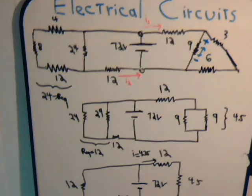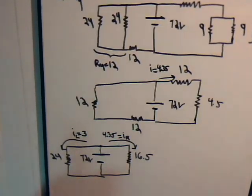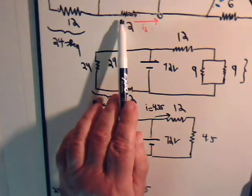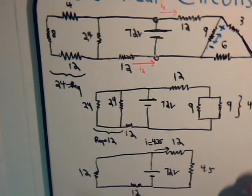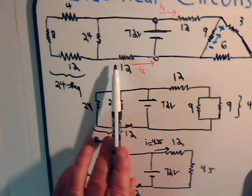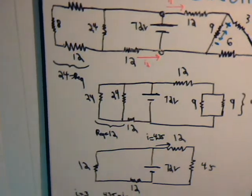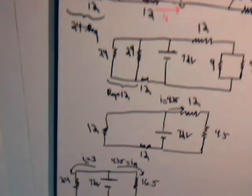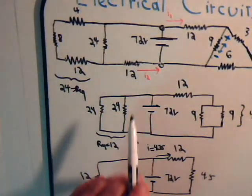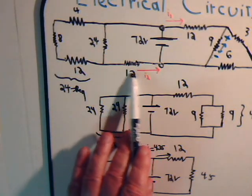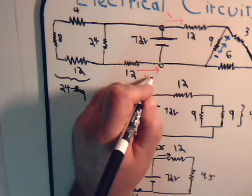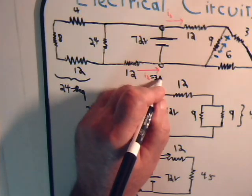For how much current goes through this resistor — that was our second question. We can see that there are 3 amps that leave the battery, so in this branch of the network, there has to be 3 amps that enter the battery. So this is 3 amps.